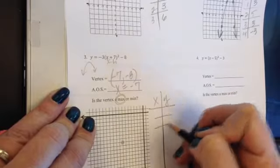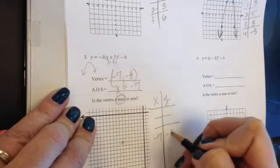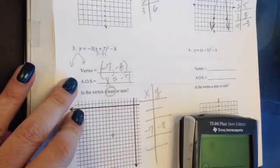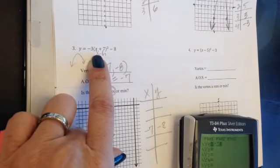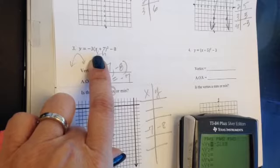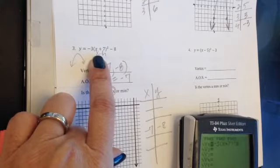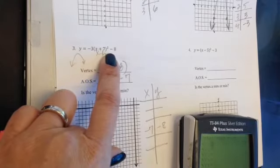I'll use my calculator again. Negative 7, negative 8 is the center. Use my calculator again to find values to help me graph the rest. Negative 3 times the quantity x plus 7 to the second power, minus 8. Go into my table.